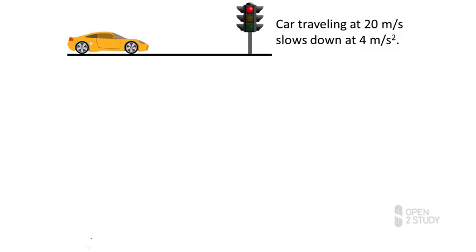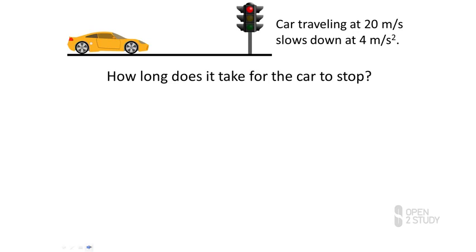It turns out that when you put the brakes on, you slow down with an acceleration of 4 metres per second squared. So the question we might like to ask is: how long does it take to slow down and stop? A very important point in physics is to look at the words and descriptions given and figure out what quantities you know.